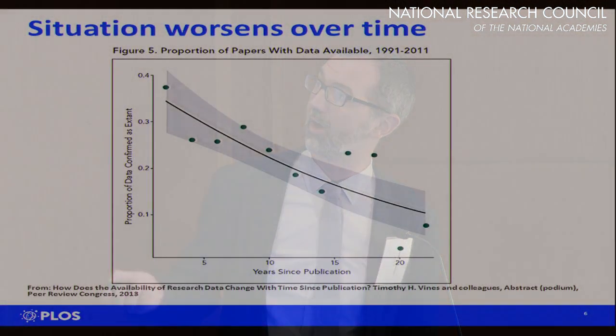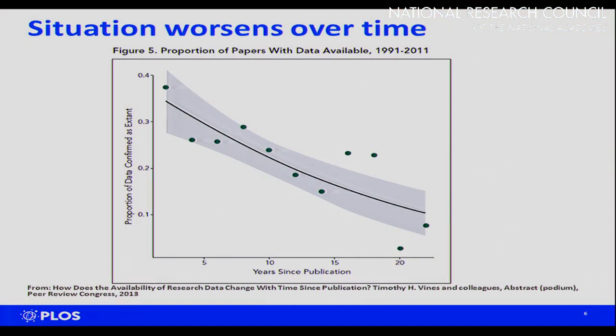There's a fairly terrifying graph from Tim Vines, executive editor of Molecular Evolution, showing how easy it is to get hold of data. Basically after 10 to 15 years, data is only around 10% accessible — you basically can't get hold of original datasets anymore. You can't expect people to archive their data in any meaningful way unless they're doing so in a public place. So what we've really pushed very hard for is deposition in repositories.